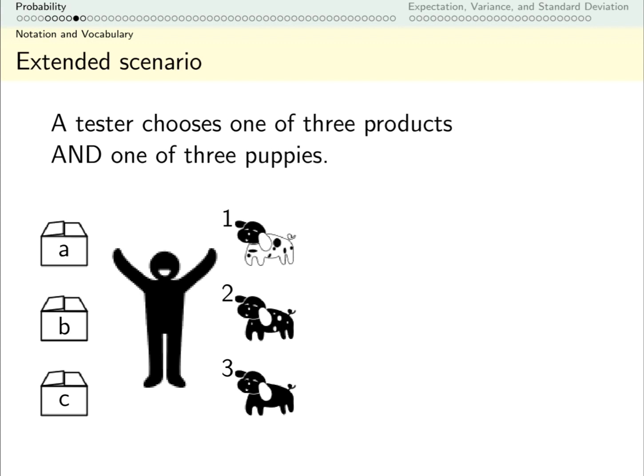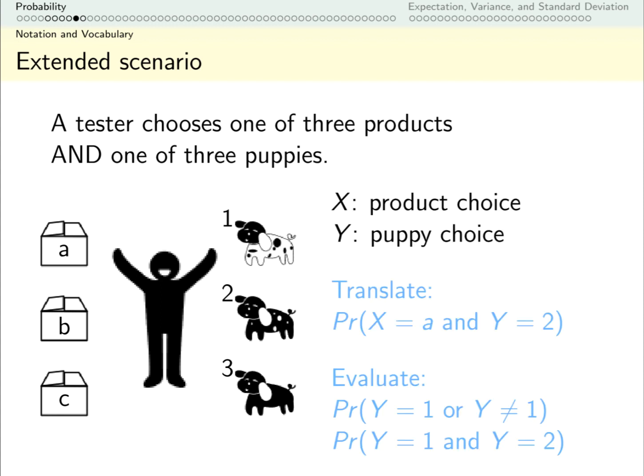We can have more than one event going on. Let's say after everybody chooses their box, they're let into a second room and they get to choose a puppy. Now I have two events, so I'm going to need two different variables for them. What I want you to do first is translate this expression into just an English sentence and then evaluate these. So you should have a number for these second and third expressions.